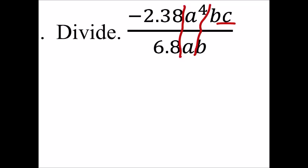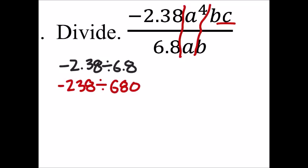So let's look at negative 2.38 divided by the 6.8 right there. And again, let's change these into whole numbers. So we've got a negative 238 divided by 680. And let's see what that gives us.